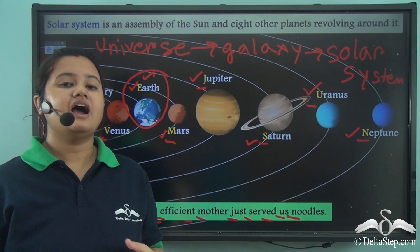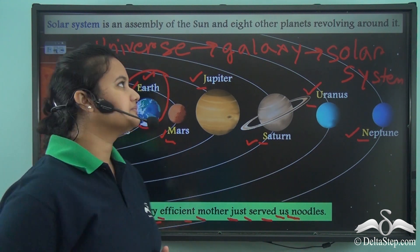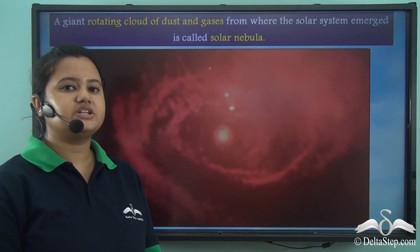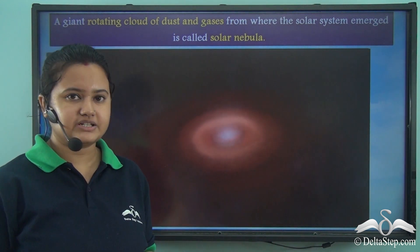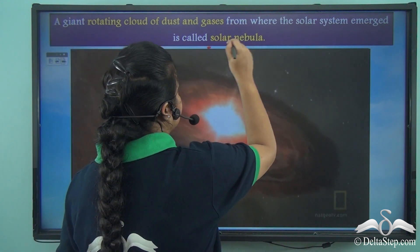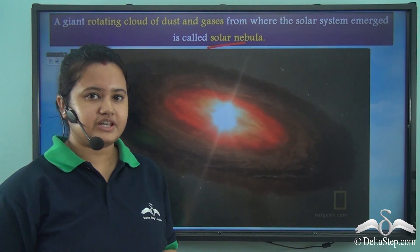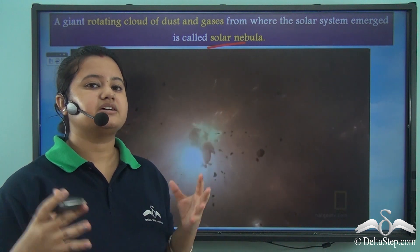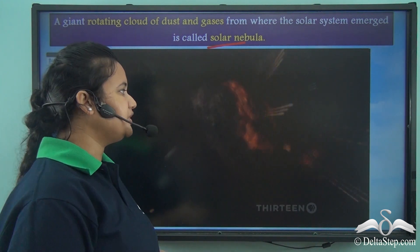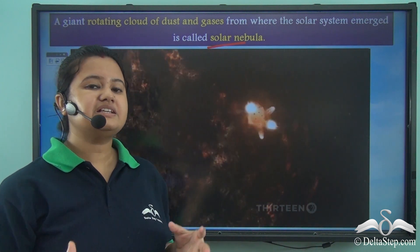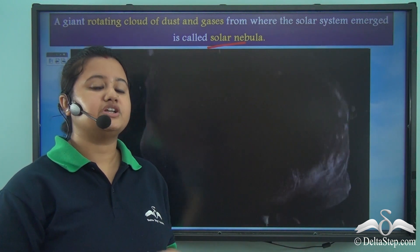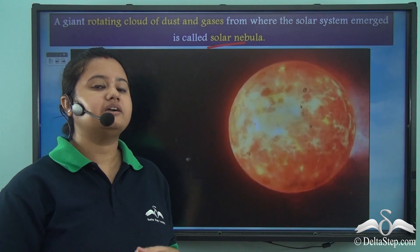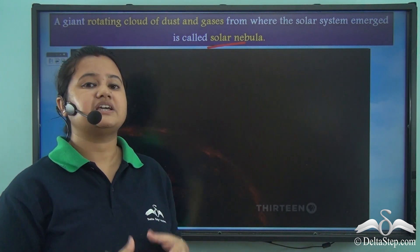Now let us see how this solar system was formed. Our solar system was formed from the collapse of a large rotating cloud of gas and dust particles, known as the solar nebula. The central point of this nebula formed the Sun. As this cloud was rotating at rapid speed, it led to the formation of several smaller units, which gradually evolved into planets. The evolution of planets started around 4.5 billion years ago, and Earth was formed in this process.